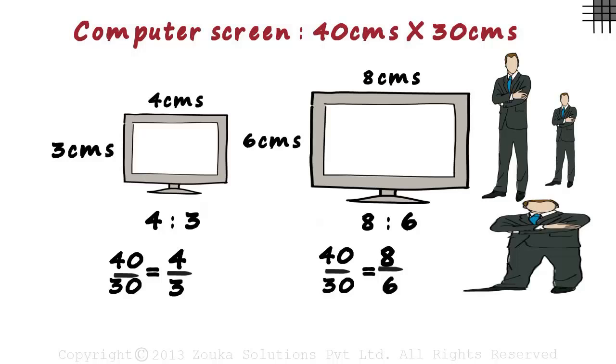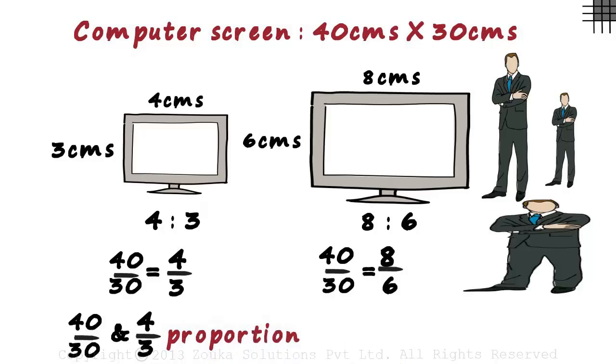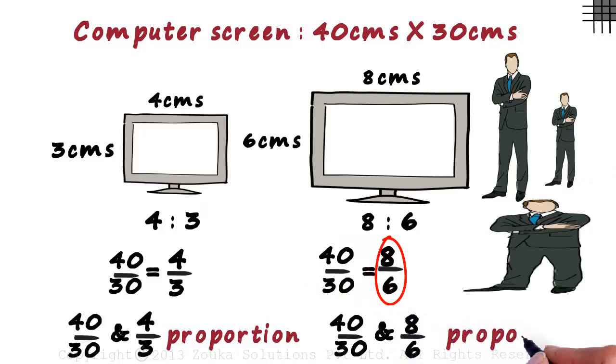Now let's get back to our first example. Since 40 by 30 and 4 by 3 are equal ratios, we say that 40 by 30 and 4 by 3 are in proportion. And similarly, 40 by 30 and 8 by 6 are also in proportion.